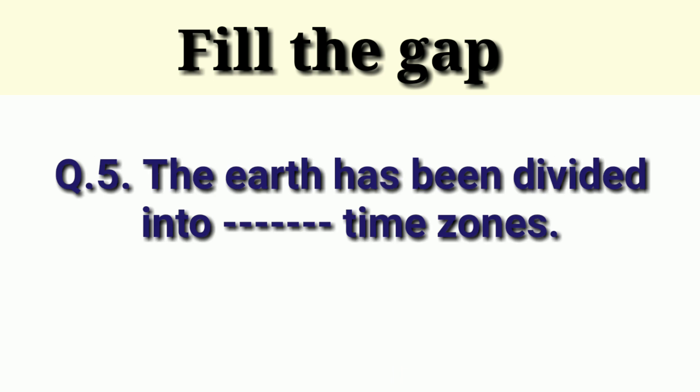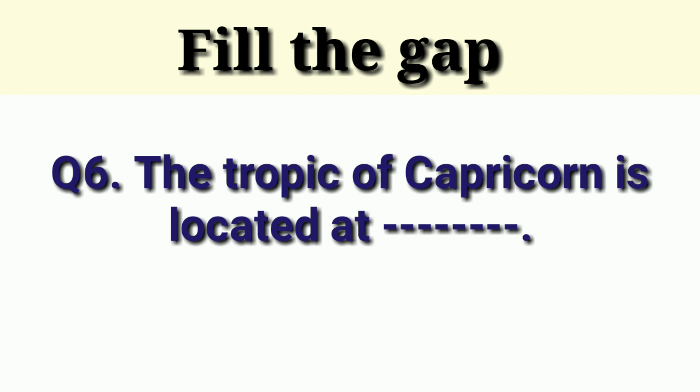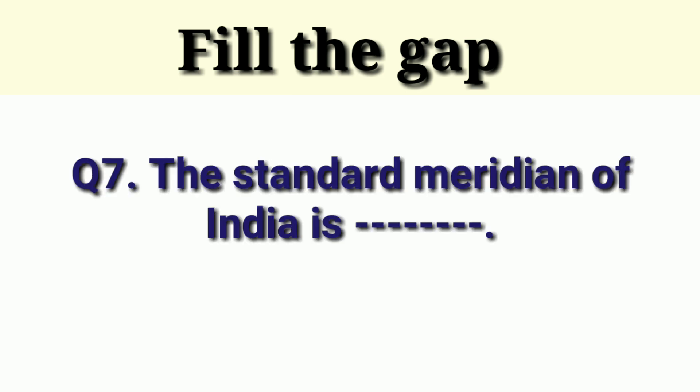Next question is the earth has been divided into dash time zones. Answer is 24. Next question is the tropic of Capricorn is located at dash. Answer is 23 degree and 30 minutes.